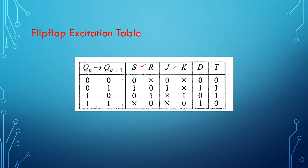For the D flip-flop excitation table, since it is a transparent flip-flop, whatever data you give as input is directly reflected at the output. So if next state must be 0, give D=0; if next state must be 1, give D=1. For the T flip-flop: if the state has to remain the same (first and last combinations), give T=0. If the state has to change, give T=1.